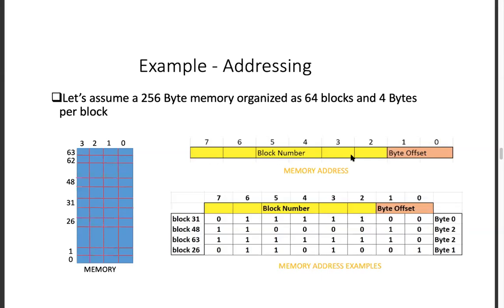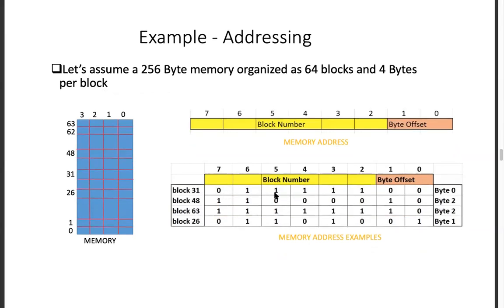For example, if you have the address 01111110 00, your byte offset from the lower two bits is 00, so byte 0. The higher six bits give block 31. Another example: block 48, byte 2 — byte offset is 10 (which is 2 in decimal), and block number is 48. So like that we can understand how this memory layout works.